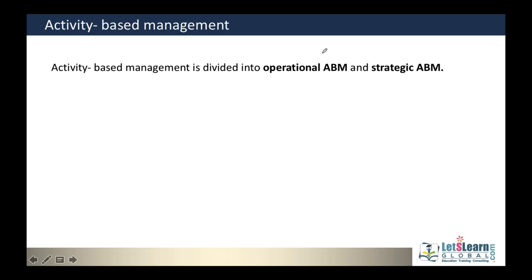Activity-based management has two types: operational ABM and strategic ABM. Operational ABM is a short-term concept focused on how best to produce goods or render services effectively, on time, and with good cost control. Strategic ABM is a long-term concept covering how to expand operations while controlling costs and improving market share.